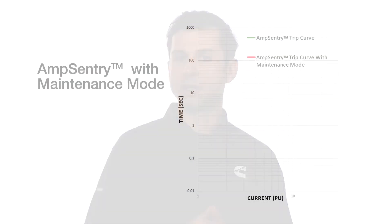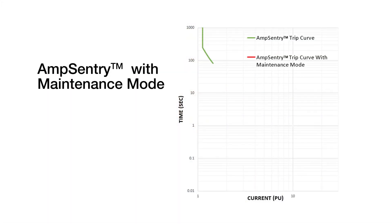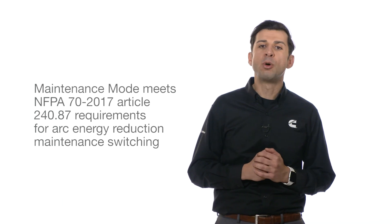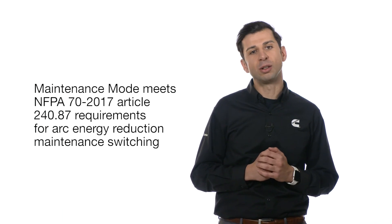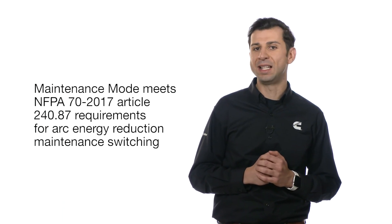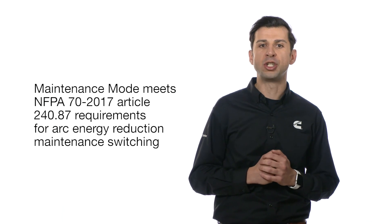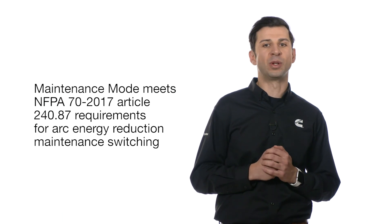Maintenance mode is similar to a circuit breaker arc energy reduction function. When maintenance mode is enabled, the generator set shuts down instantaneously in the event of a short circuit, bypassing all time delays. Maintenance mode meets NFPA 70 Article 240.87 requirements for arc energy reduction maintenance switching.